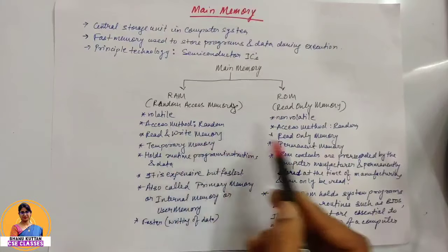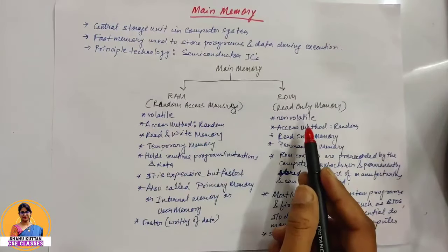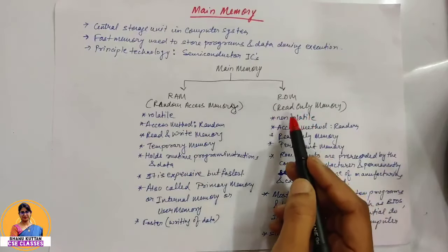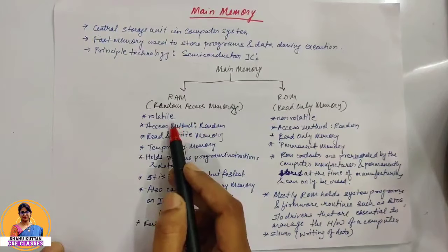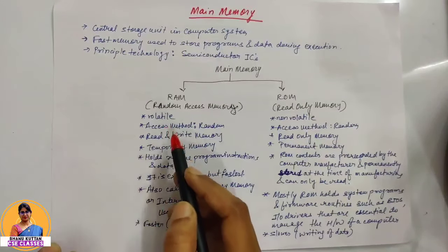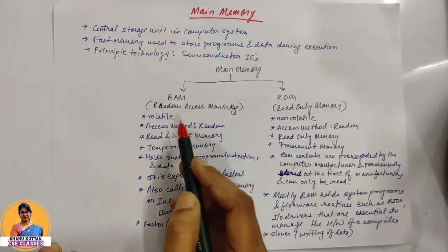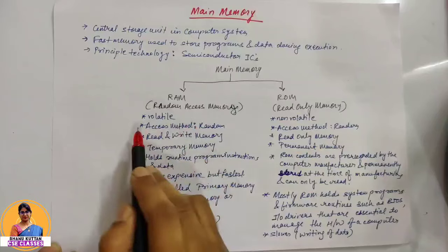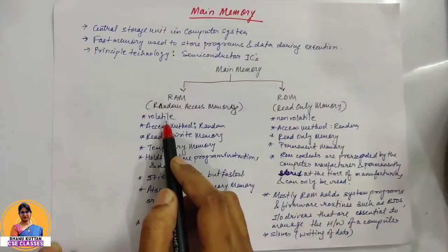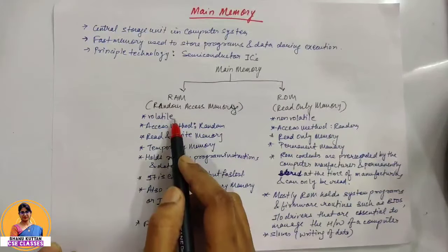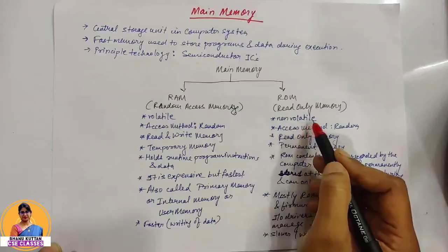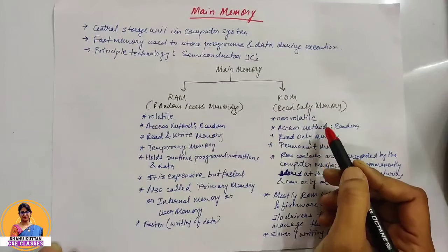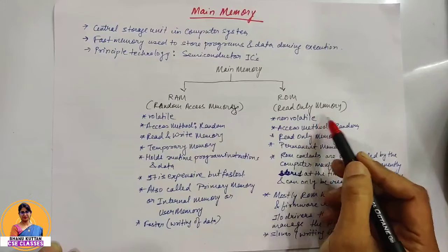We divide main memory into two categories: RAM (Random Access Memory) and ROM (Read Only Memory). RAM is a volatile memory — volatile means if we power off, whatever data is stored will vanish. That's why we call it volatile. ROM is a non-volatile memory — if data is present, it will be permanently stored; after power off, the data is not removed.